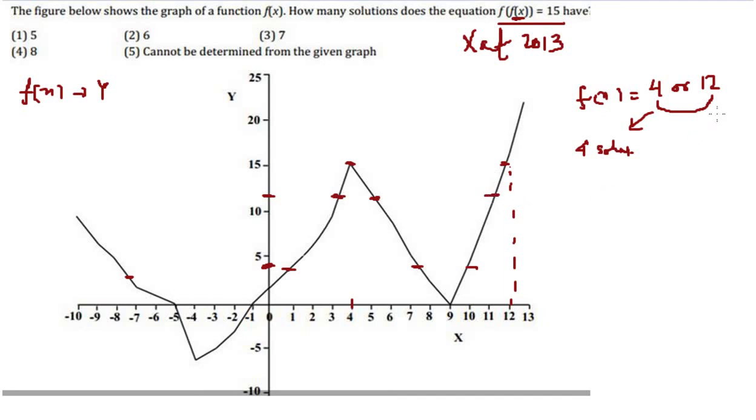So in all we have three solutions from here, and the total number of solutions would be the sum of these. So total solutions is 4 plus 3 equals 7. Option 3 is the right choice. Thank you.